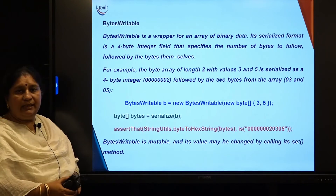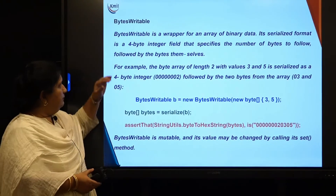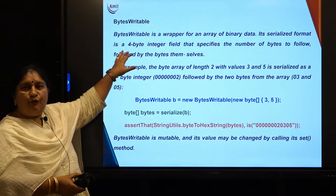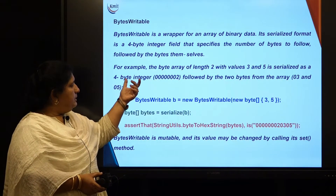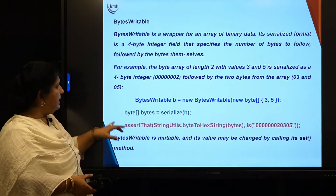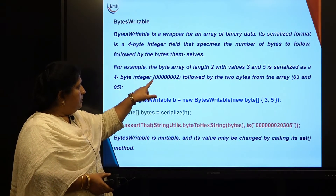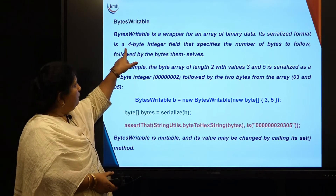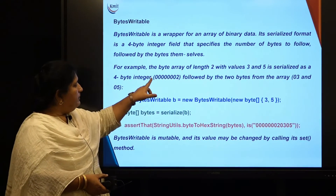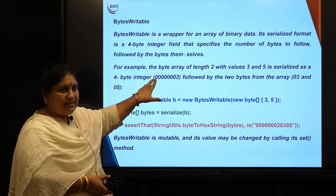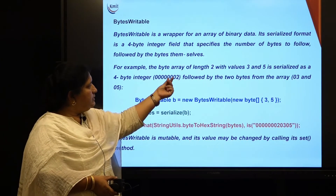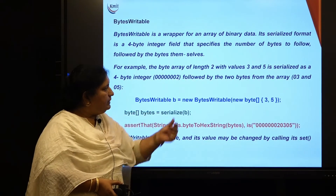We also have BytesWritable, which is a wrapper class for an array of binary data. The serialized format uses a 4-byte integer field specifying the number of bytes that follow. For example, a byte array of length 2 with values 3 and 5 is serialized as a 4-byte integer indicating 2 bytes follow, followed by the 2-byte array — where each byte stores one value: 0x03 and 0x05.